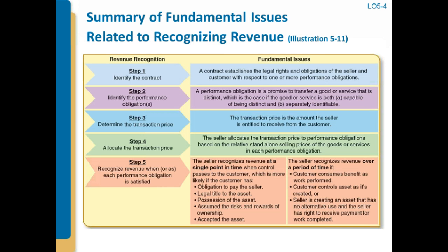So that's kind of Part A. If we think about summarizing these basic steps, on the left are the steps we walk through, and on the right are the fundamental issues: figuring out when you've got a contract, determining whether you've got separate performance obligations, determining the transaction price, allocating that transaction price, and then recognizing revenue at a point in time or over a period of time if you meet one of those three criteria.